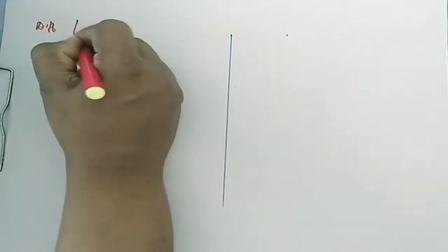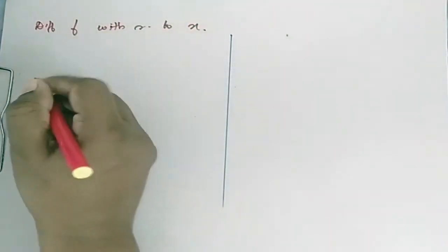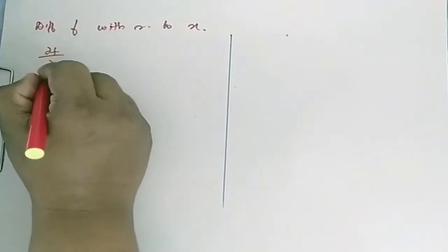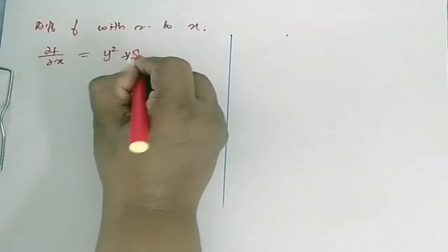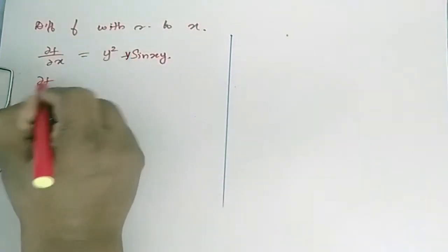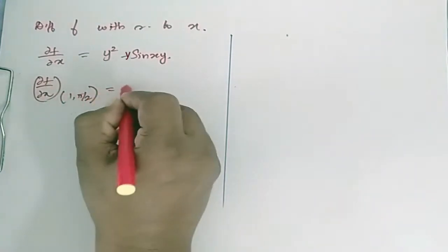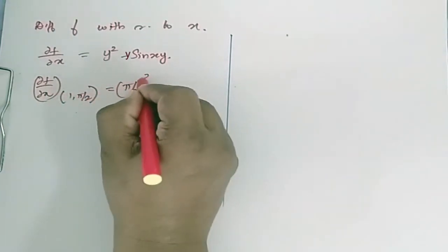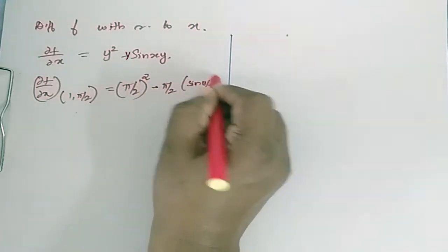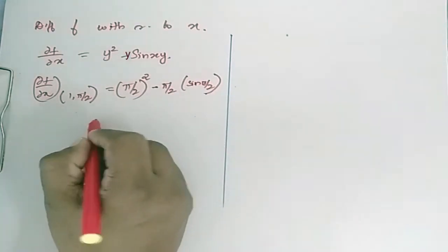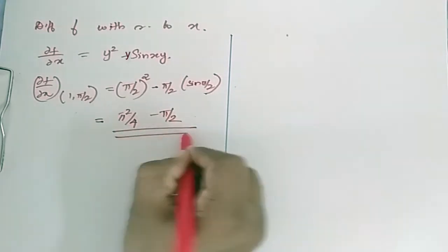Differentiate f with respect to x. So ∂f/∂x = y² − y·sin(xy). ∂f/∂x at (1, π/2) = (π/2)² − (π/2)·sin(π/2), which is equal to π²/4 − π/2.